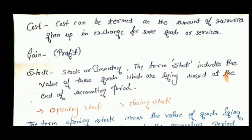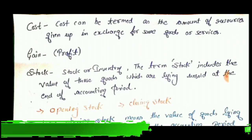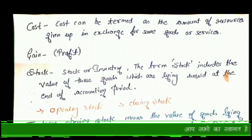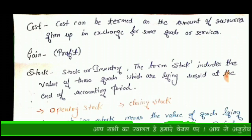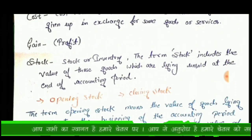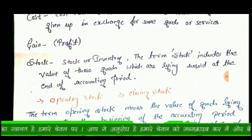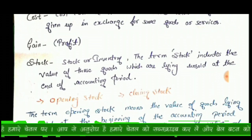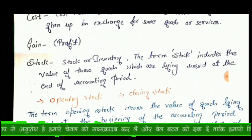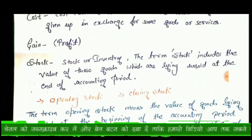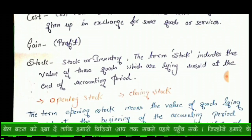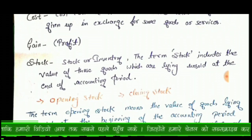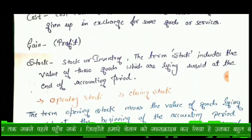Next is stock, also called inventory. The term stock includes the value of those goods which are lying unsold at the end of the accounting period. For example, if you have an electronics business with 50 LED TV sets, and 20 have been sold while 30 remain, those 30 sets are your stock.